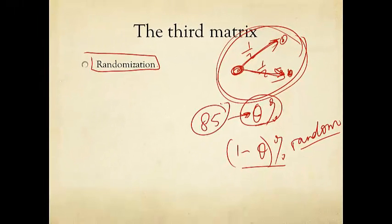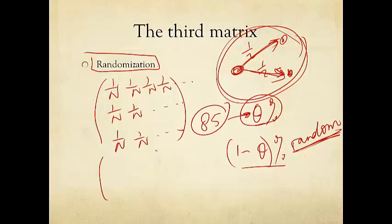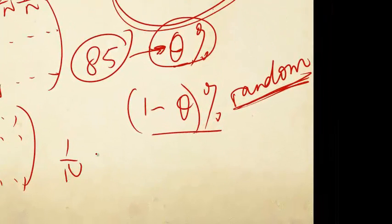It turns out that we tend to pick 85%, or 0.85, as the right trade-off between relevance of the connectivity pattern and the speed of convergence. So how do we model this random flipping of web pages? We have a big matrix which has every entry equal to 1 over n — every single row is just 1 over n — which we can write as a matrix of all ones divided by n, or equivalently 1 over n times a vector of ones outer product with a vector of ones.